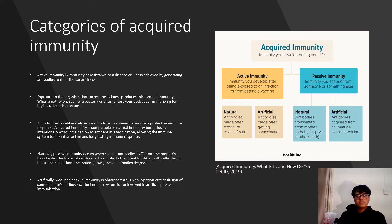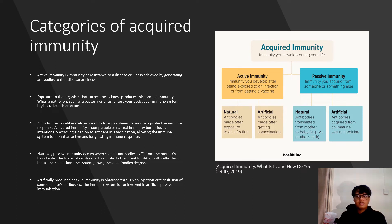Active immunity is immunity or resistance to a disease achieved by generating antibodies to that disease. Active natural immunity results from exposure to the organism that causes a sickness. When a pathogen such as bacteria or viruses enters the body, the immune system launches an attack. T cells connect to the pathogen and present it to B cells, which produce antibodies that target and kill pathogens. If the pathogen resurfaces, the B cells will recall the antibody, providing long-term immunity. Active artificially induced immunity involves deliberately exposing an individual to a foreign antigen to induce a protective immune response, comparable to natural immunity but through intentional exposure via vaccination.